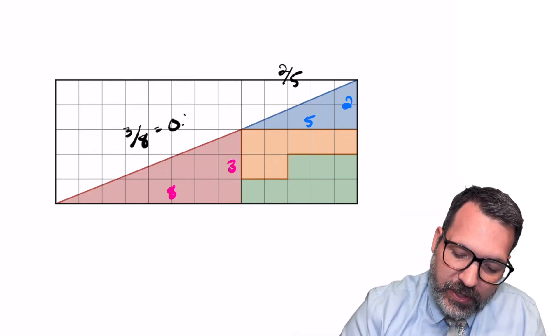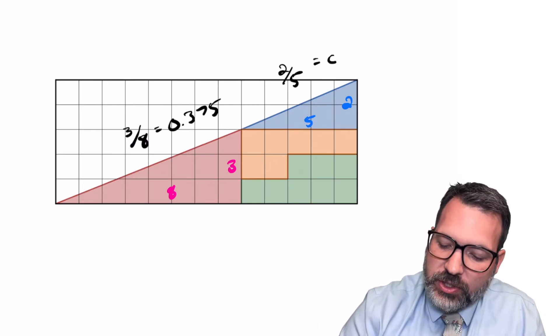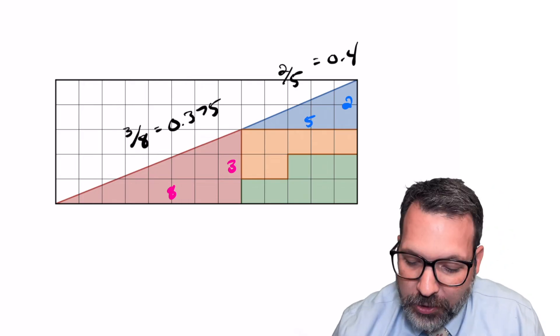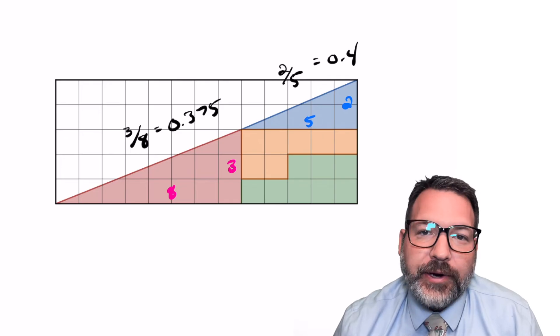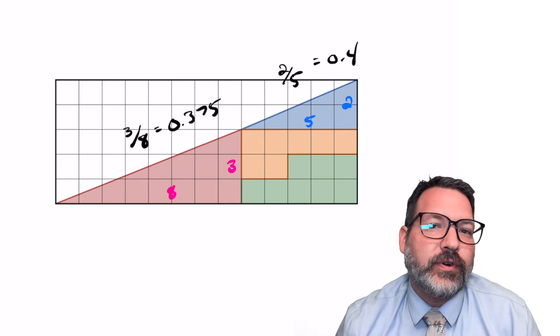In decimal notation, 3 eighths is 0.375, 2 fifths is 0.4. And so you can see why the looks are deceiving here, why it appeared like this was a single line, but actually isn't. They have slightly different slopes.